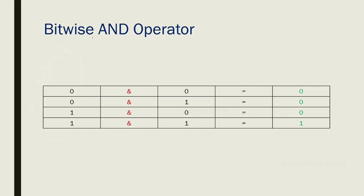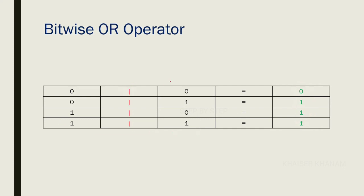For the bitwise AND operator: 0 AND 0 gives 0, 0 AND 1 gives 0, 1 AND 0 gives 0, and 1 AND 1 gives 1. How to remember this: for the AND operator, if all bits are 1 only then the result will be 1, otherwise the result will be 0. It is represented by a single ampersand symbol (&).